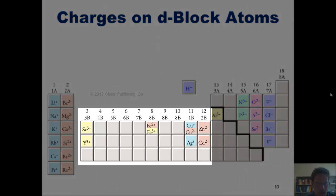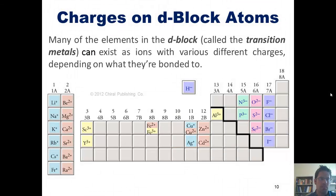The question now becomes, what about metals in the middle of the d-block, the region indicated here? Well, as it turns out, many of the metals in the d-block, which are called transition metals, can exist as ions with various different charges depending on what they're bonded to.